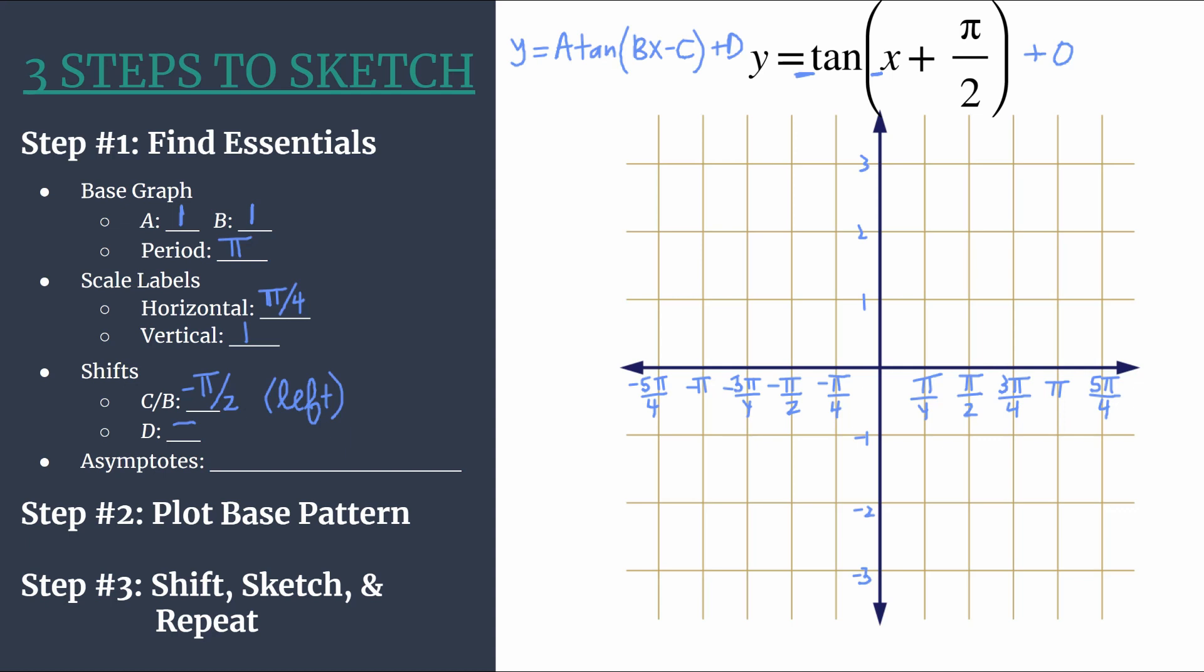So the horizontal transformations are the inputs of the tangent function. And all you have to do to find the asymptotes equation is set those. So x plus pi over two equal to the parent function asymptotes. So those are the asymptotes of tangent x, which are pi over two plus pi K where K is an integer. So we have this set up and now we just need to solve for x. We'll do that by subtracting pi over two from both sides.